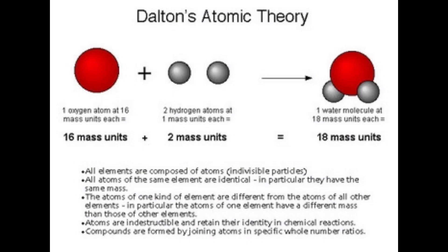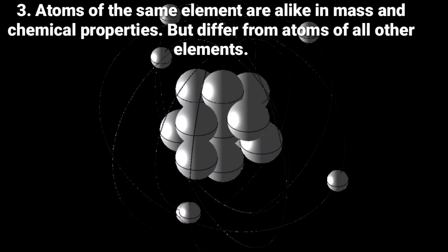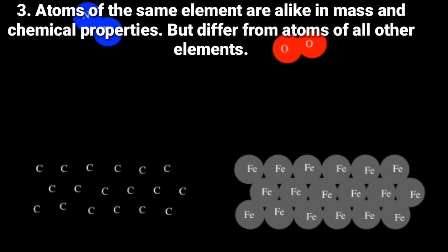Now third postulate: atoms are alike in mass and chemical properties but differ from atoms of all other elements. If we talk about carbon, all atoms of carbon element have the same mass and same chemical properties. But if we have two different elements, carbon and oxygen, then the mass of their atoms and chemical properties are different.